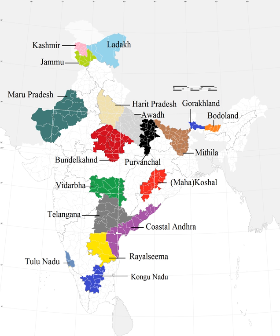The Dimasa Kachari people of northeast India have been demanding a separate state called Dimaraji or Dimaland for several decades. It would comprise the Dimasa-inhabited areas, namely Dimahaseyo district, parts of Kachar district, parts of Nagan district, parts of Hojai district, and Karbi Anglong district in Assam, together with parts of Dimapur district in Nagaland.